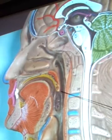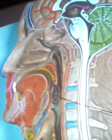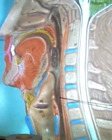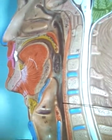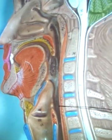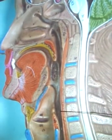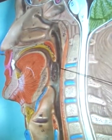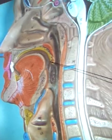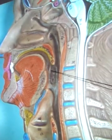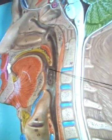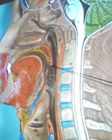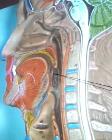Remember nasopharynx, oropharynx, laryngopharynx. We said the fauces was the opening between the oral cavity and the oropharynx. It is best marked right here. That's the isthmus of the fauces, or just plain fauces.